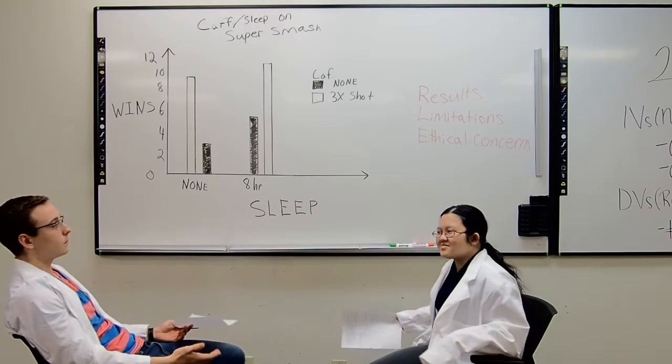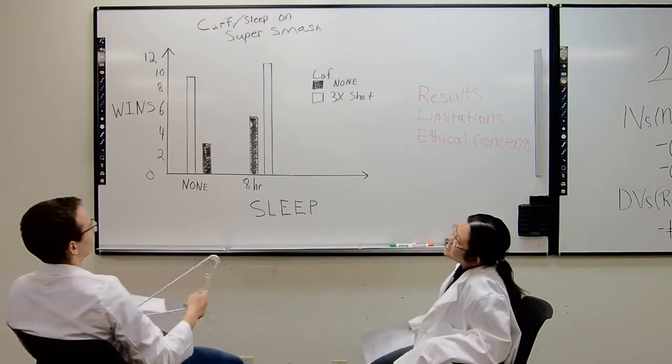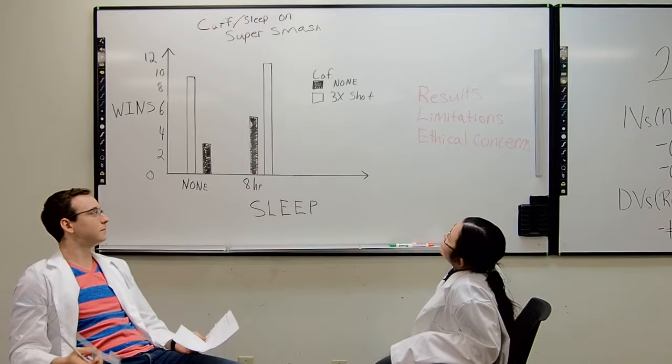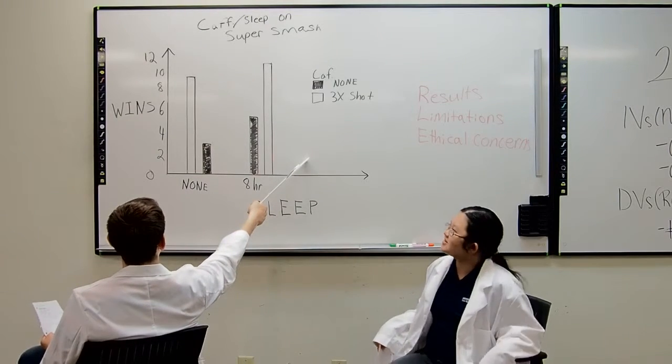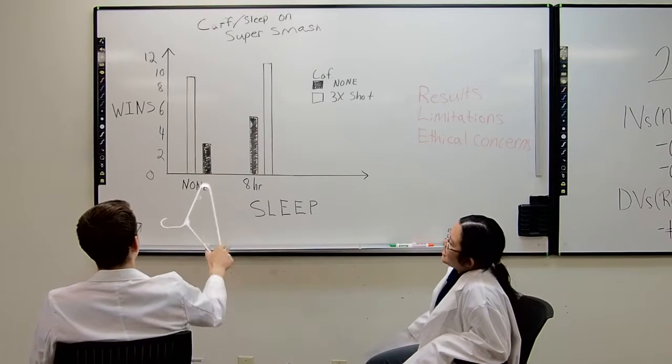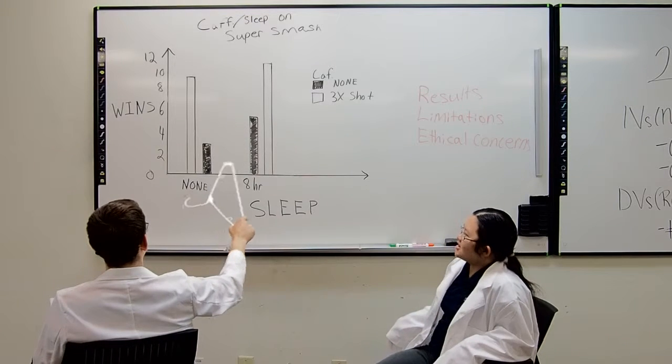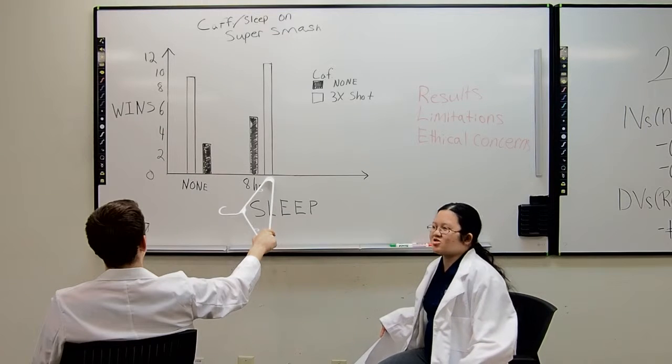So we did find some interesting results. It looks like caffeine consumption and sleep do affect Super Smash Bros performance. The group that performed the worst was the group that had no sleep and no caffeine consumption. The group that performed the best was the group that had eight hours of sleep and consumed a triple shot of espresso.